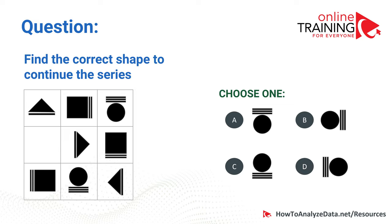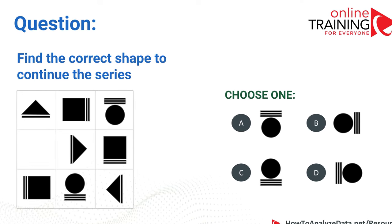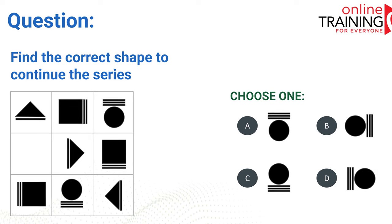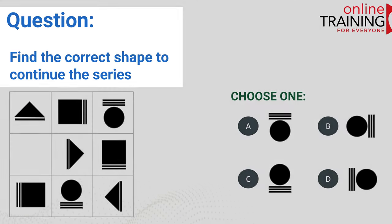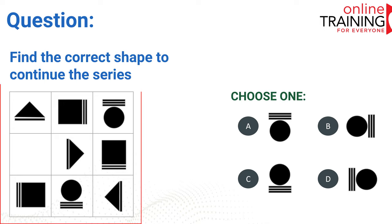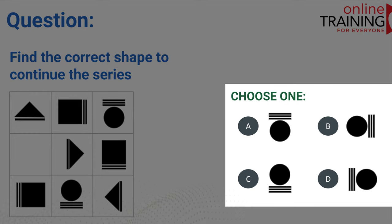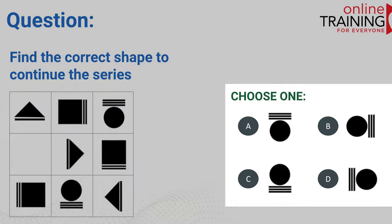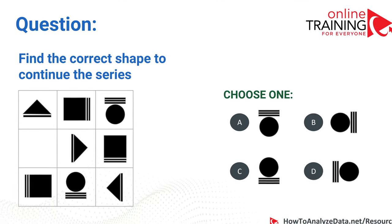Now let's look at a very complex question which you see a lot during logical reasoning tests, psychometric tests, and numerical reasoning tests. Find the correct shape to continue the series. We have a 3x3 matrix with 8 shapes populated and 1 shape missing. There are 4 choices, but in order to find the right shape you need to determine the pattern. In fact, there are 2 patterns on this screen.